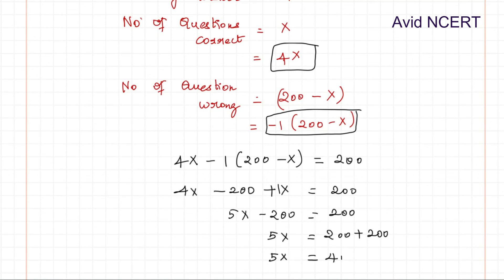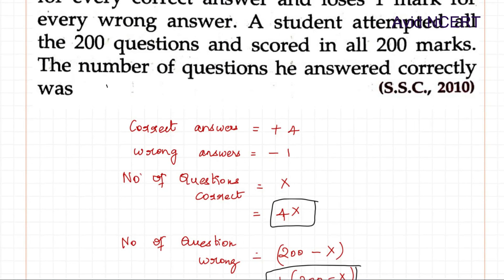5X equals 400. Therefore, X equals 400 by 5, which equals 80. Therefore, the number of questions he got correct answer is 80.